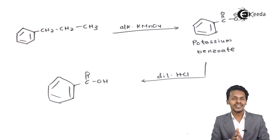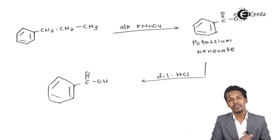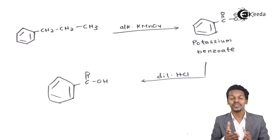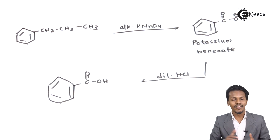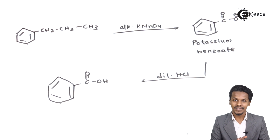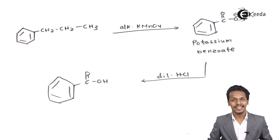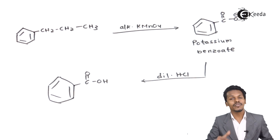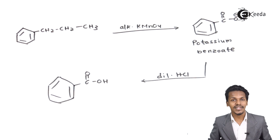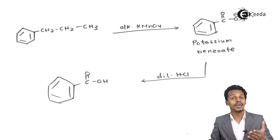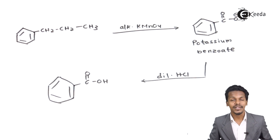All these reactions were related to how we can prepare carboxylic acid by oxidation method — from aldehyde, from primary alcohol, and from alkyl benzene. Thank you for watching this video. I hope you have understood how we can prepare carboxylic acid, and I hope to see you next time.